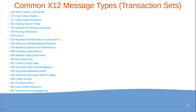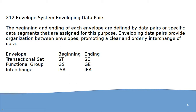These are the most popular transactions used by multiple trading partners in their industries as per their requirements. The X12 envelope system defines how data pairs are structured when building files. Each envelope is defined by specific data segments providing organization and a clear, orderly interchange of data.